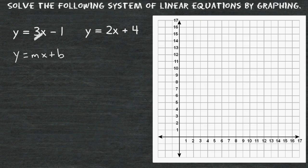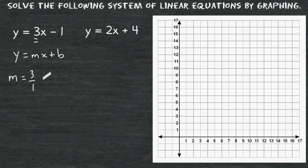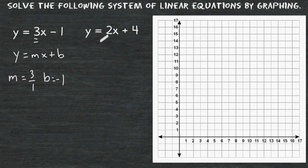The value or coefficient in front of x is the m value, or the slope. For the first equation, our slope is equal to 3 over 1. If you have a whole number for slope, just write a 1 for the denominator — that tells you the run of the line. Remember, slope can be defined as rise over run. For the y-intercept, or where the line crosses the y-axis, that will be the b value, which is the number at the end of our equation. For the first equation, the b value, or the y-intercept, is equal to negative 1. And for the other equation, the slope is equal to 2 over 1, and the y-intercept, or the b value, is equal to positive 4.